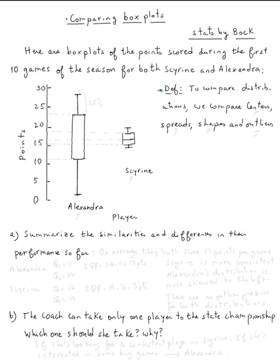So let's read this example. Here are box plots of the points scored during the first ten games of the season for both Schyrene and Alexandra. And then question A - so that's Alexandra's box plot, and this is the box plot for Schyrene.